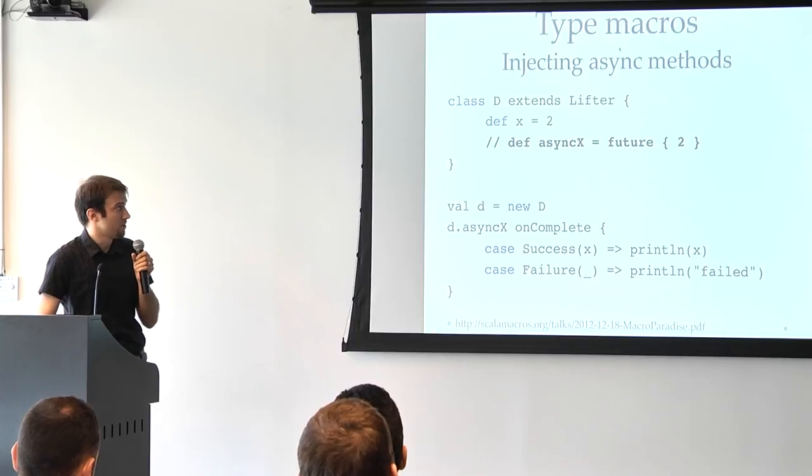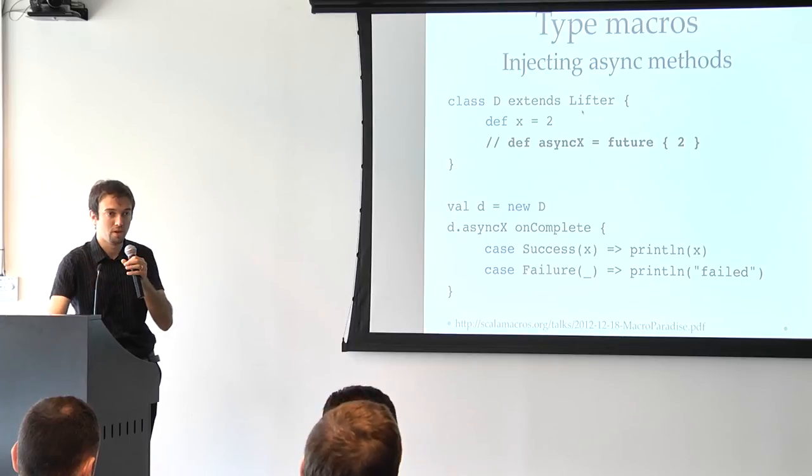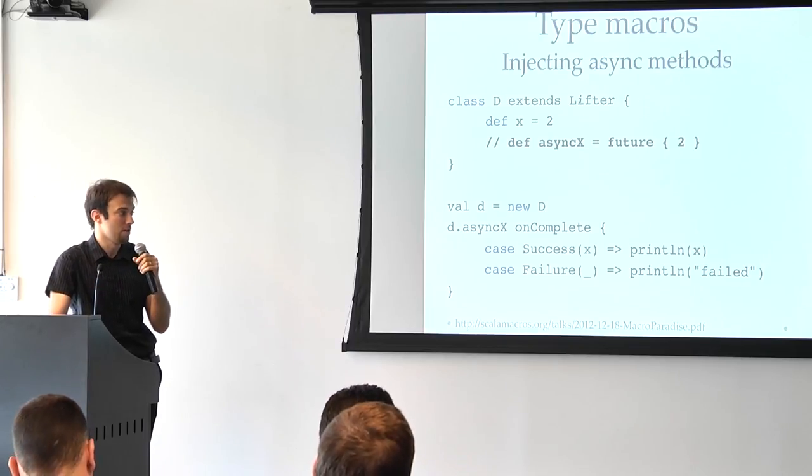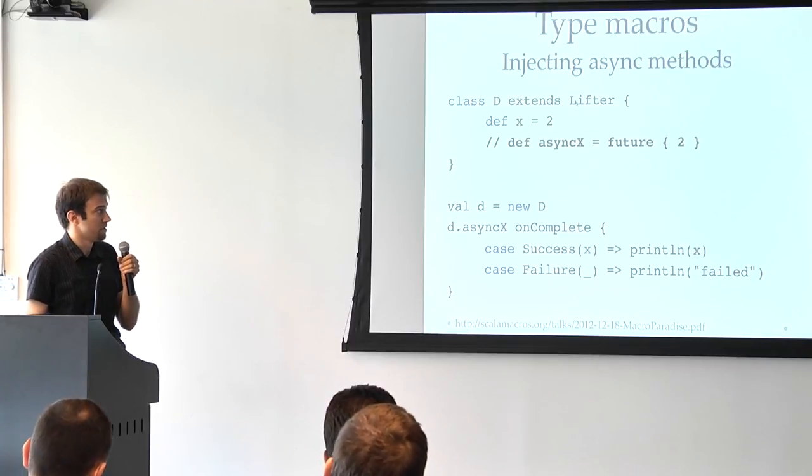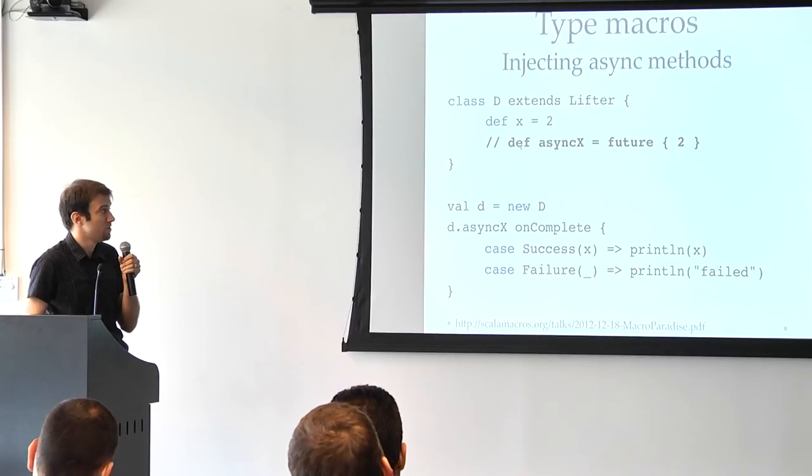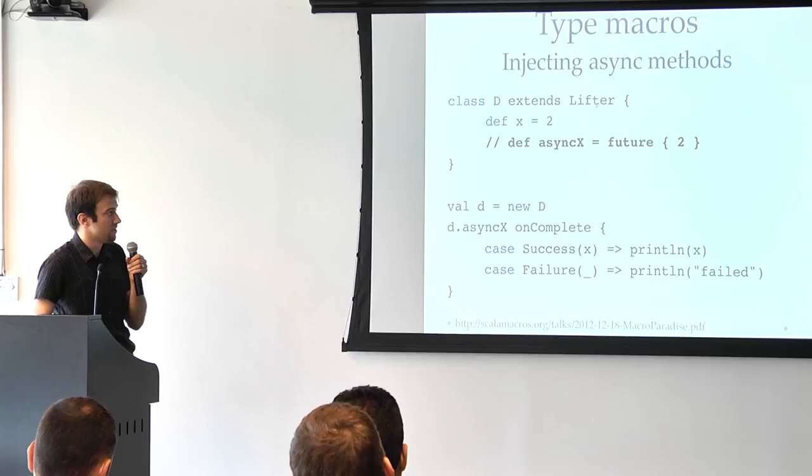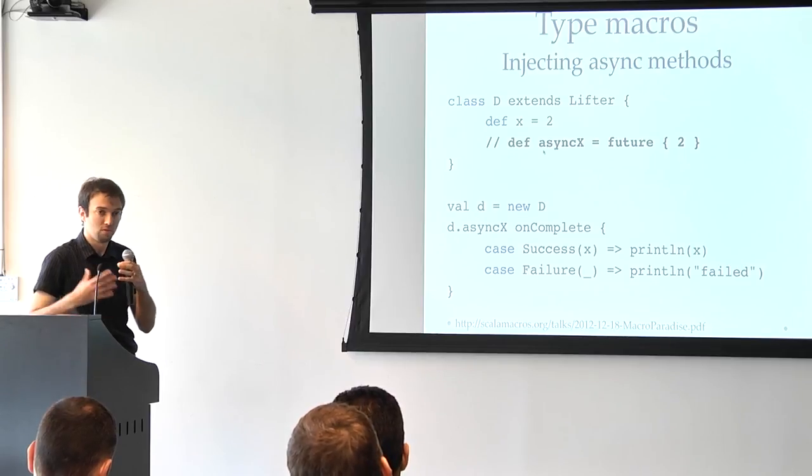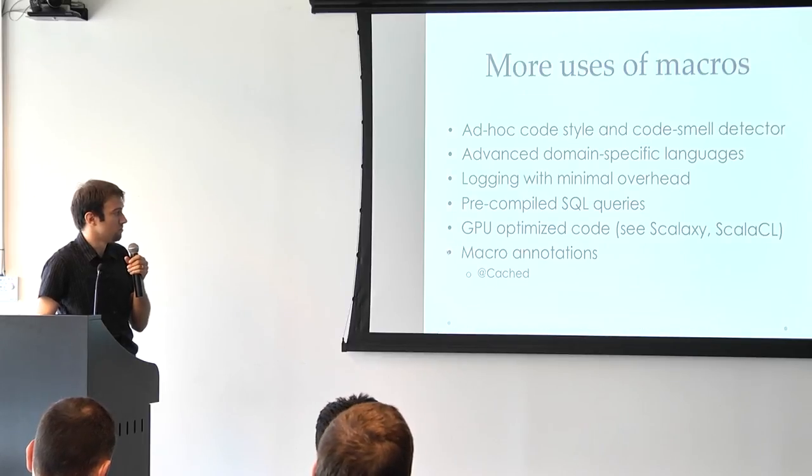Type macros allow you to extend the set of members or the functionality of an object. And it's aware of the previous members that the object already had before we basically extended it with a type macro. In this case, if we have the method x, and we want to inject a synth x that will just run it inside the future, all we need to do is basically extend the lifter. And the lifter is a type macro.